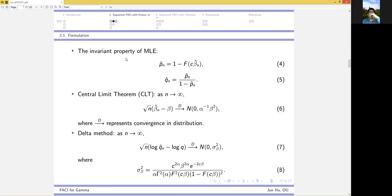According to the invariance property, the central limit theorem, and the delta method, we can conclude the asymptotic normality of log of q hat, where the asymptotic variance has this form in explicit expression, and we denote it by sigma beta squared.